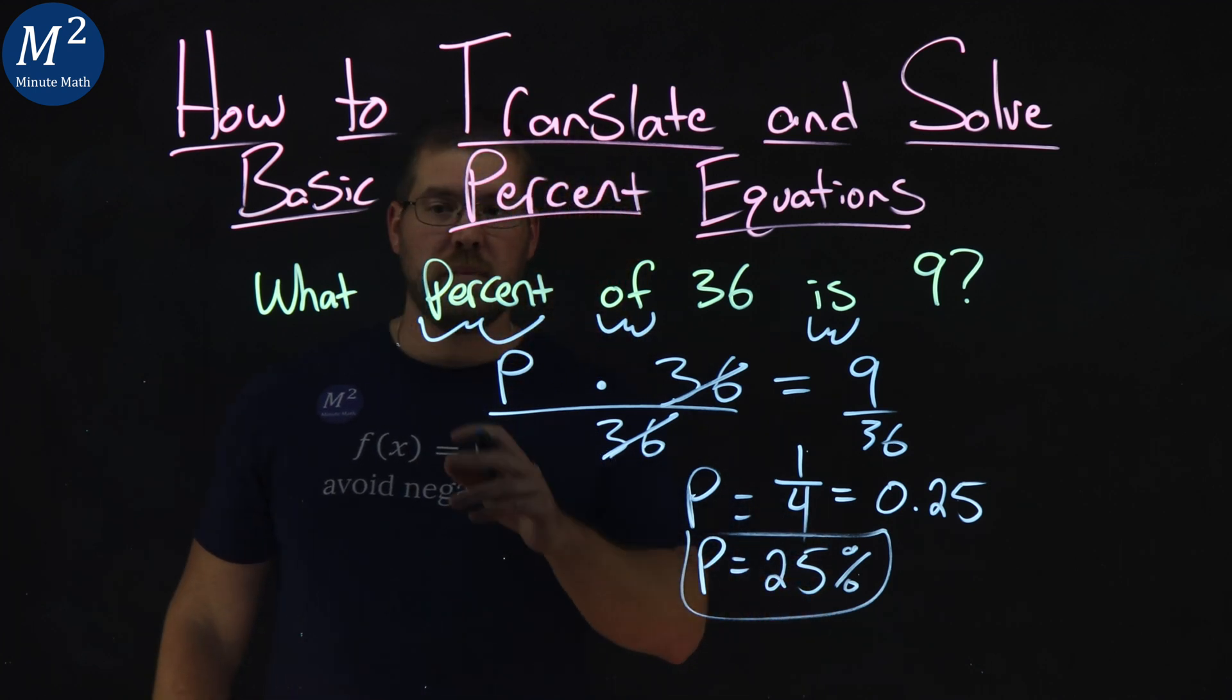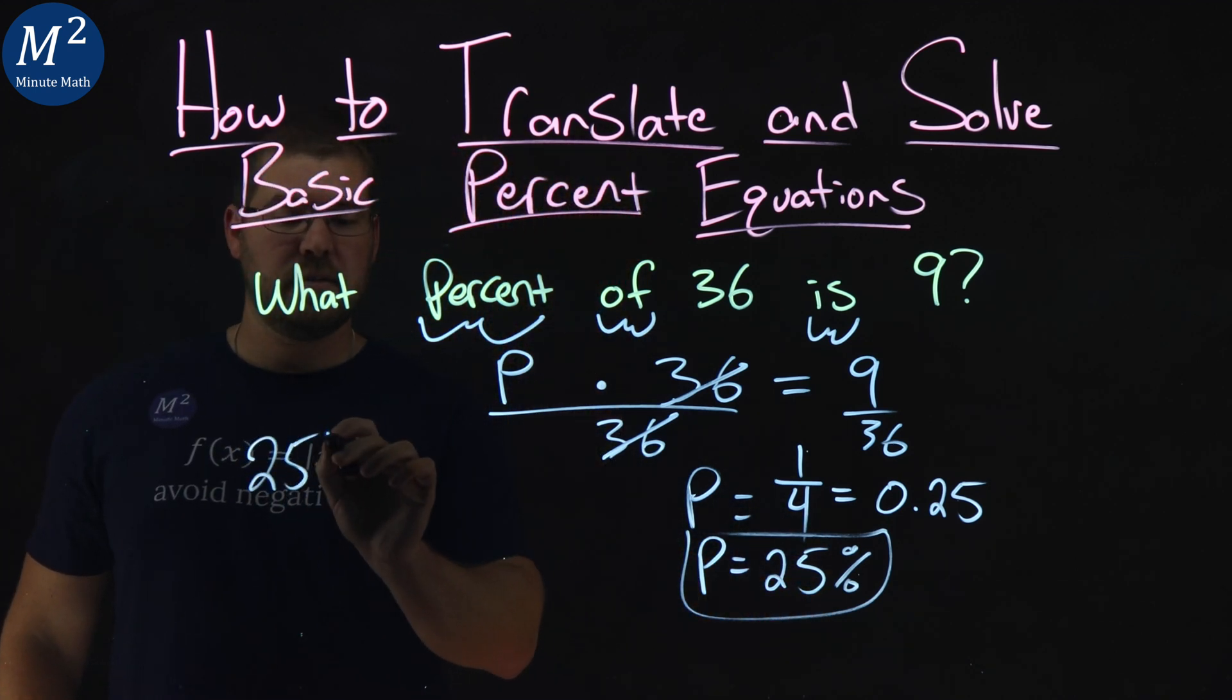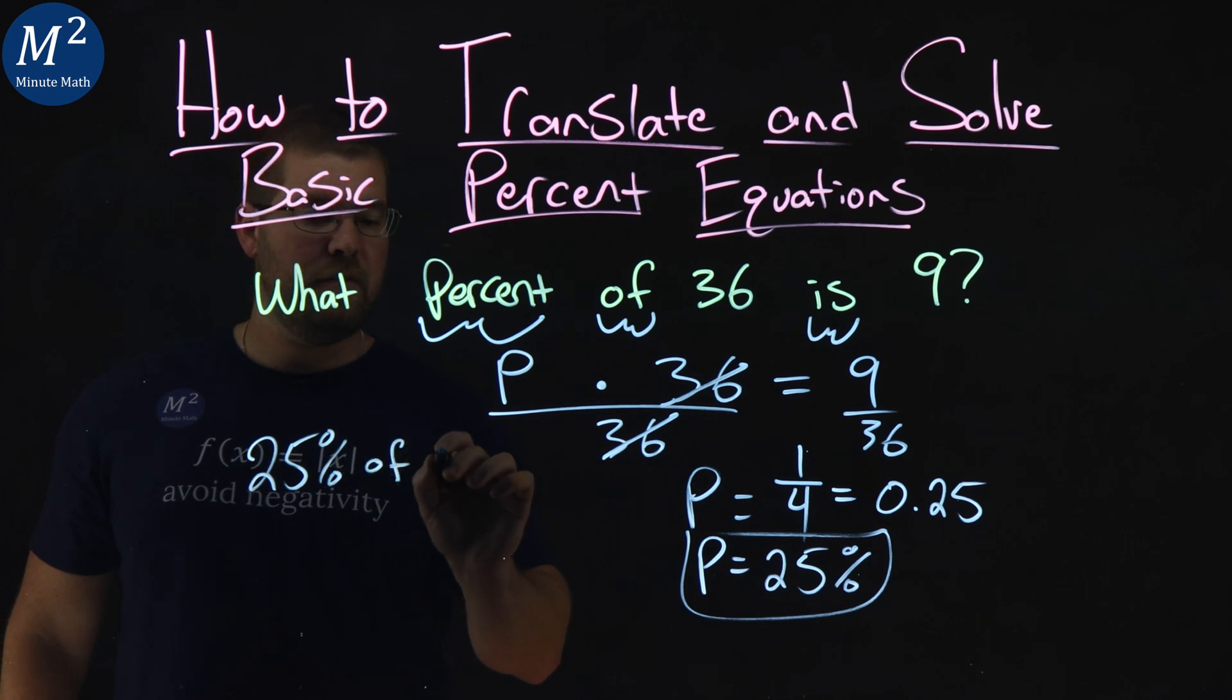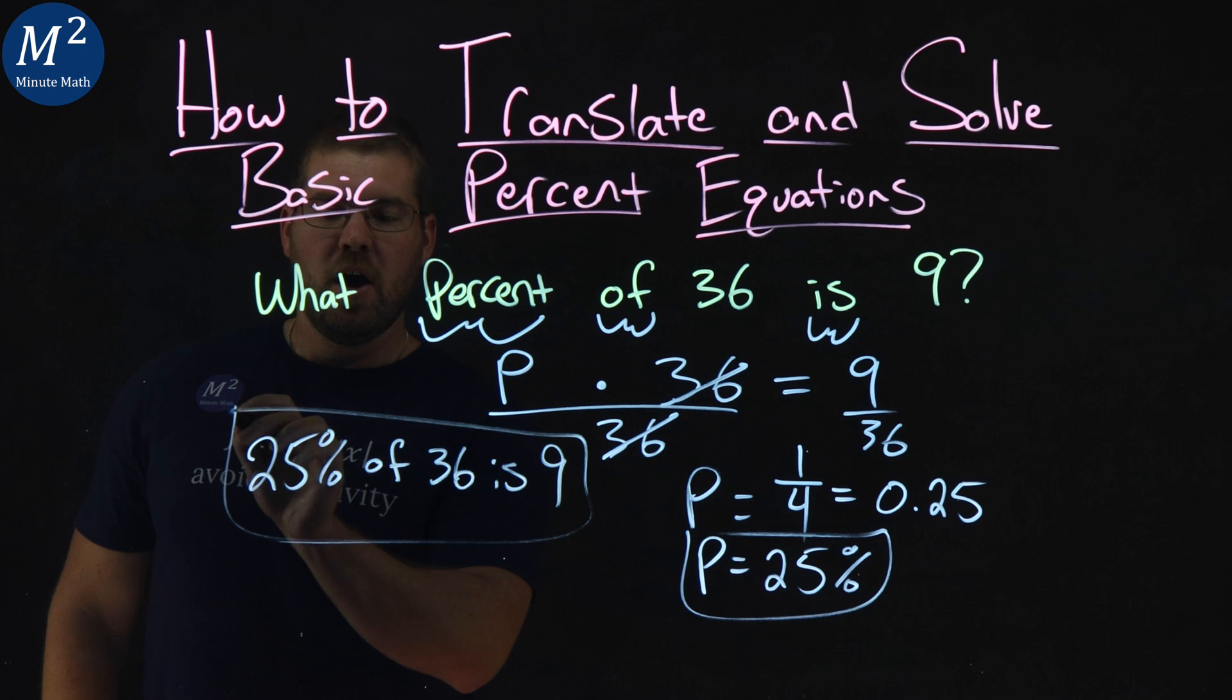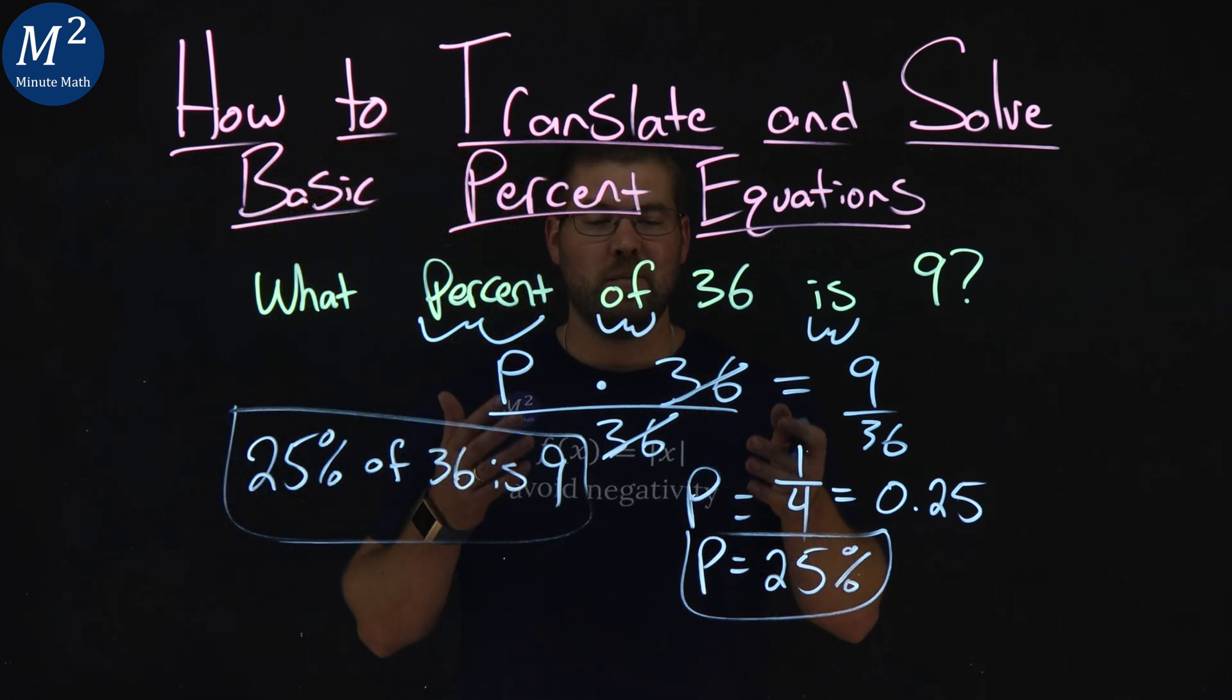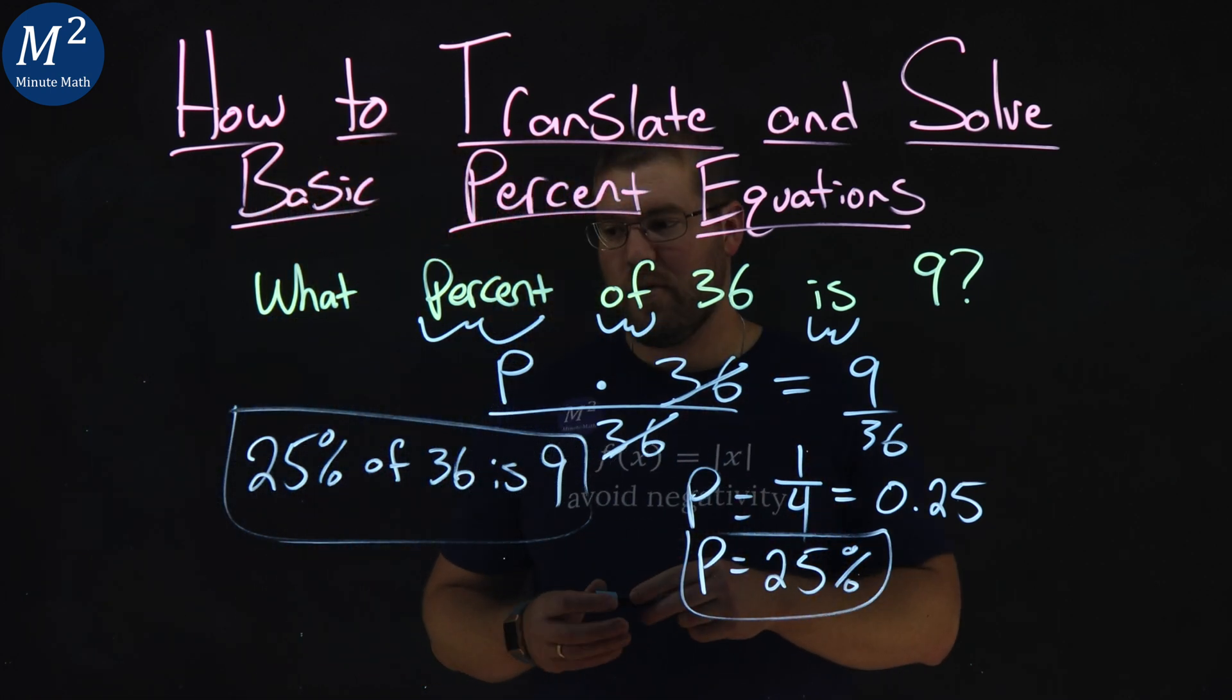0.25 as a percent is 25%. So let's recreate our statement here with 25%. What percent? So 25% of 36 is 9. And that's our statement with our solution, again, with P being 25%.